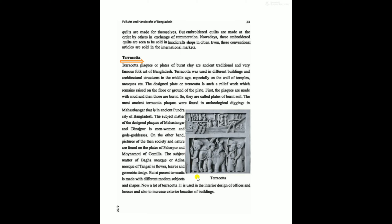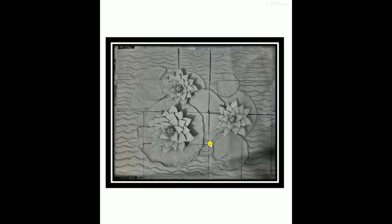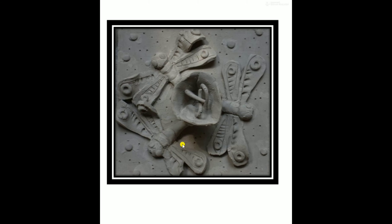Our most ancient terracotta finds are at Mahasthangarh, Paharpur, Mainamati of Comilla, Bagha Mosque, Adina Mosque of Tangail, etc. I would like to show you some examples of terracotta. These terracotta pieces show a before-burning look — artists carve their own designs on clay. This terracotta shows an after-burning look. I think this terracotta was made for an office or a house.